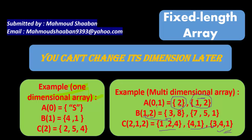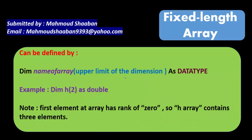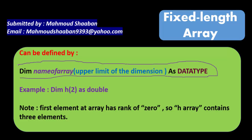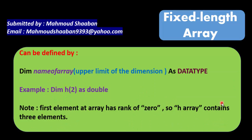Let's see how we can define an array. We can define it with this statement: first we use the word Dim, then the name of the array, then parentheses containing the upper limit of the dimension, then As, then the data type. For example, Dim h(2) As Double means I have declared an array called h with three elements, because the first index is zero, then one, then two.